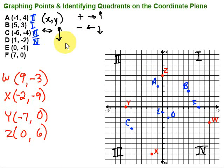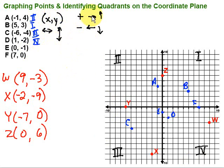To summarize graphing points and identifying quadrants on the coordinate plane: the quadrants start in the upper right where x and y values are positive — that's quadrant 1 — and we go counterclockwise labeling the four quadrants. Points located on the x-axis or y-axis are not in a specific quadrant. The x-coordinate determines left or right, and the y-coordinate tells us up or down. Positive directions are to the right and up; negative directions are to the left and down. Hope this video was helpful — keep working hard on your math, you can do it!